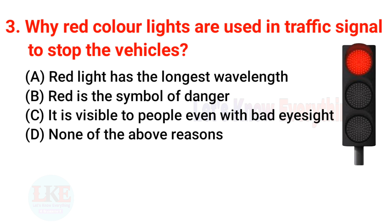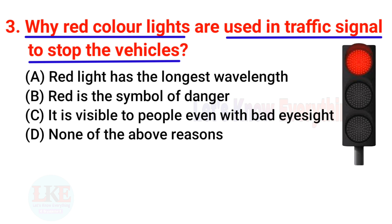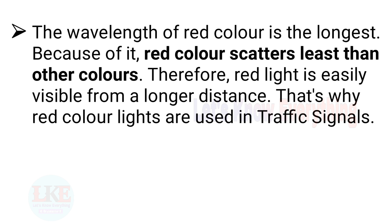Question number 3: why are red color lights used in traffic signals to stop vehicles? Right answer, option A: red light has the longest wavelength. The wavelength of red color is the longest, so red color scatters less than other colors. Therefore, red color is easily visible from a longer distance — that's why red color lights are used in traffic signals.